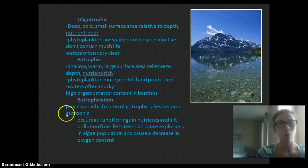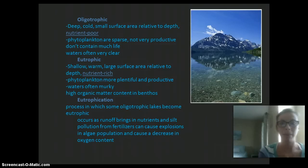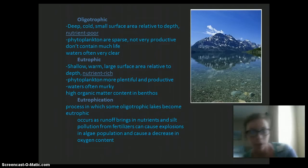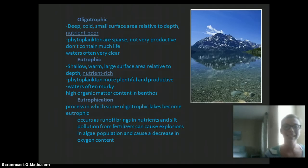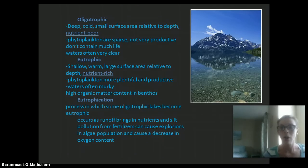Eutrophication is an important word to know. It is the process in which an oligotrophic lake becomes a eutrophic lake. What happens is runoff — rainwater brings nutrients, silt, and pollution from fertilizers into the lake. This causes explosions of algae. Algae feeds on these fertilizers and then decreases the oxygen content in the lake, which can kill fish. These are called algal blooms. Red tide is a very common one we have here in Florida.